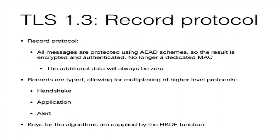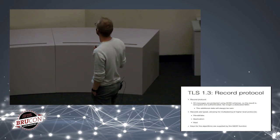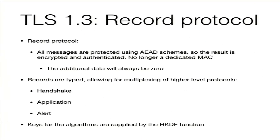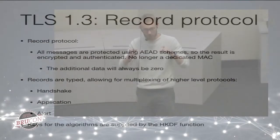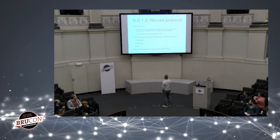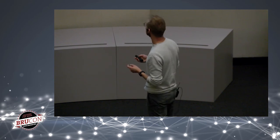In TLS 1.3, the additional data field of AEAD is always set to zero — everything from the application layer is fed directly to the secure channel layer with no additional data. The records support multiplexing of higher-level protocols: the handshake protocol for key exchange, application data which is encrypted, and alerts for communicating errors to higher layers. All keys for these features are derived using HKDF from the initial key exchange.